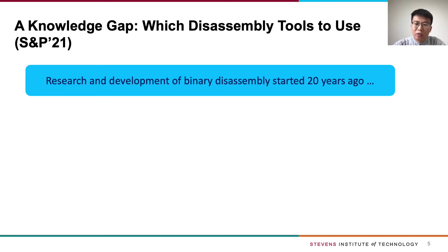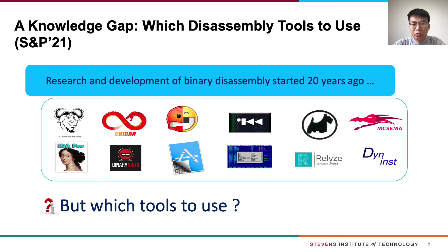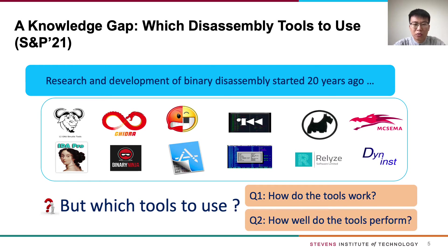Binary disassembly has seen remarkable advancements in the past 20 years, providing researchers and developers with a variety of tools and frameworks in both open source and commercial licenses. When you want to do binary disassembly, you have so many choices — but which tools to use? In order to answer this question, we present this SoK work. Specifically, we want to answer two questions: first, how do the tools work? And second, how well do the tools perform?